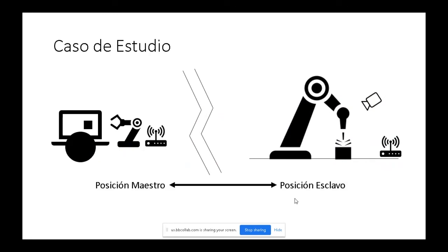El caso que nos ocupa es operar de forma remota el extremo operativo de un robot manipulador esclavo. El objetivo es lograr una sincronización entre el extremo operativo del maestro y el extremo operativo del esclavo. Si solo se toma así, estaríamos hablando de un problema de teleoperación unilateral, como lo que normalmente se hace en cirugía remota, donde el cirujano no tiene realimentación más allá de la visual.